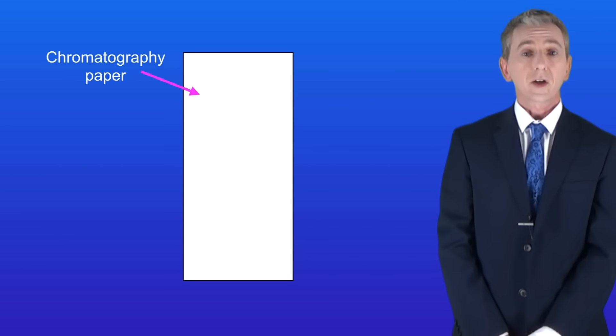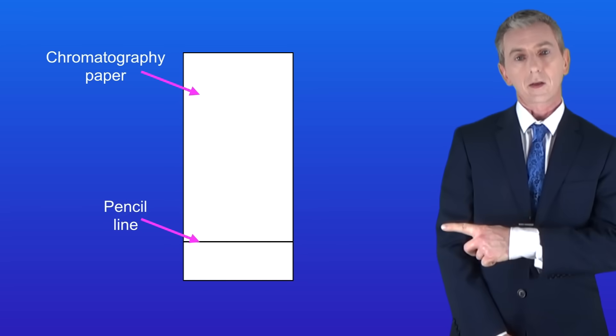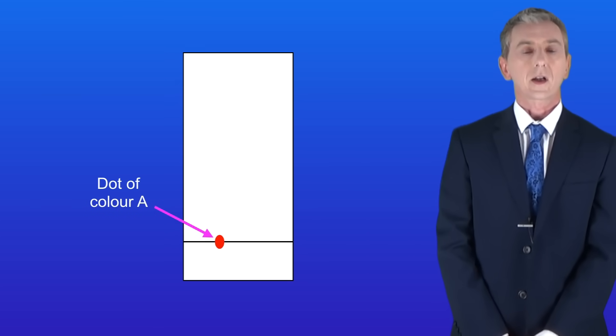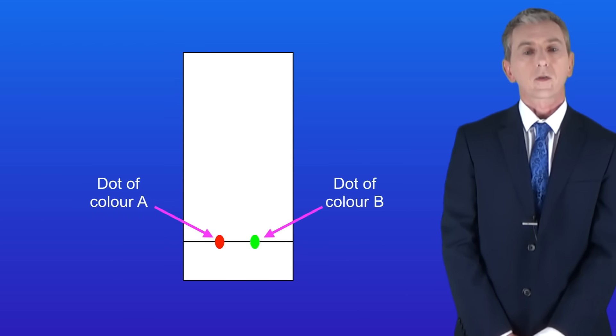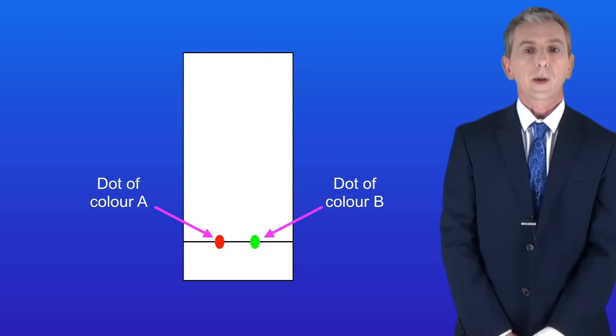We take a piece of special paper called chromatography paper and we draw a pencil line near the bottom like this. Next we put a dot of our first color onto the pencil line and next to that we put a dot of our second color. We can do this for several colors as long as there's enough space on the paper.